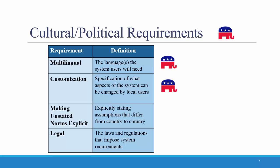The third category is making unstated norms explicit, meaning that you should explicitly state assumptions that differ from country to country or in different cultures. For example: All weights will be stated in pounds and in kilograms. Or, dates will be listed month-day-year or day-month-year. Unstated norms could also deal with the culture of the organization, not just of the country as a whole. For example: What type of software or hardware is normally used in our organization?